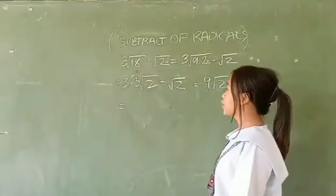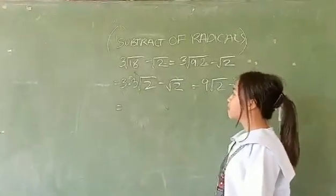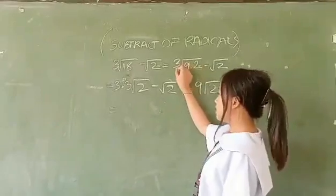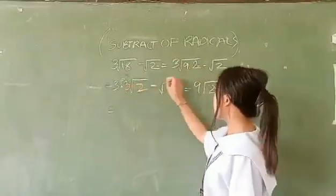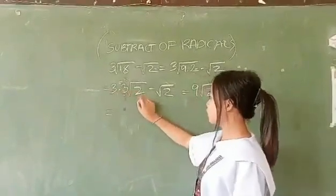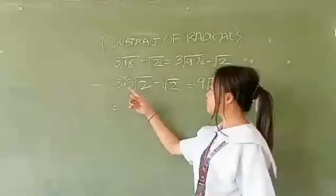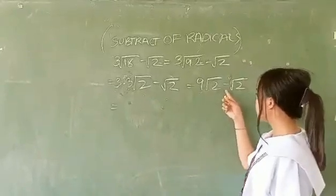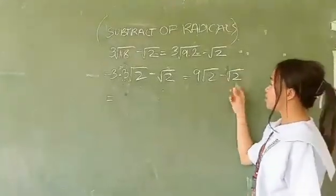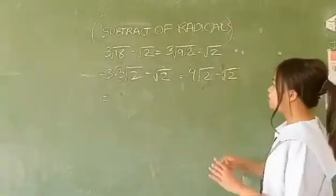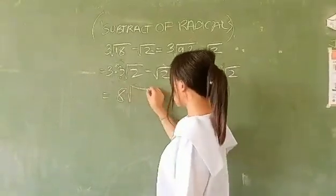How about subtraction of radicals? 3 times square root of 18 minus square root of 2. For 18, we find the factors: 9 times 2. We get 3 times square root of 9 times square root of 2 minus square root of 2. The square root of 9 equals 3, so it becomes 3 times 3 times square root of 2 minus square root of 2. That gives 9 minus 1 equals 8. The answer is 8 times square root of 2.